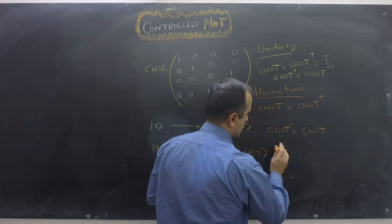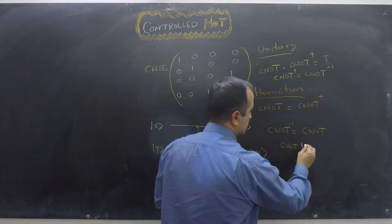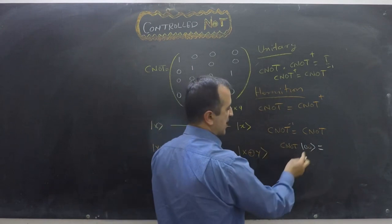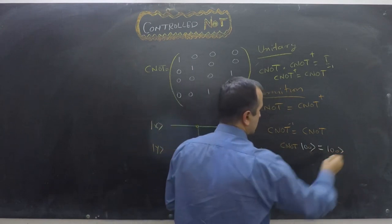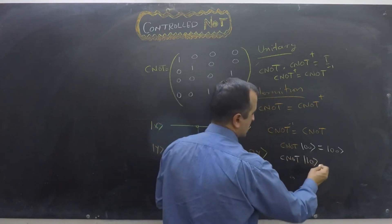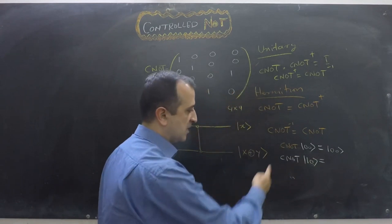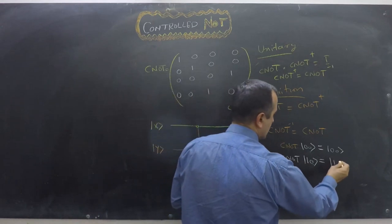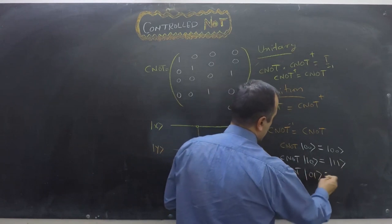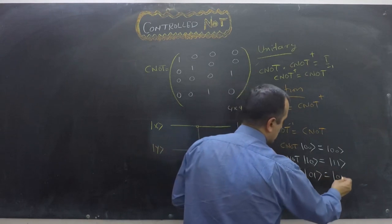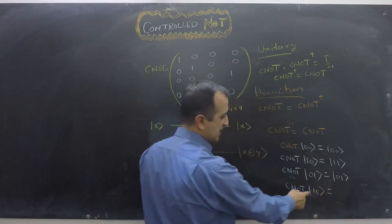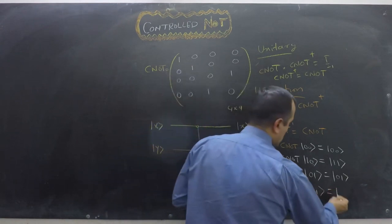Applying CNOT to |00⟩: first qubit is 0, so second qubit stays — output is |00⟩. Applying CNOT to |10⟩: first qubit is 1, so second qubit flips to 1 — output is |11⟩. Applying CNOT to |01⟩: first qubit is 0, so output is |01⟩. Applying CNOT to |11⟩: first qubit is 1, so second qubit flips — output is |10⟩.